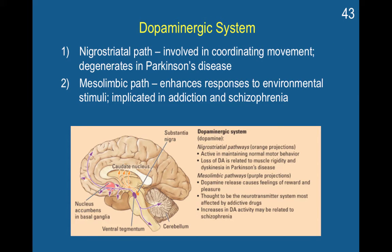Next is the dopaminergic system, which involves two paths. The nigrostriatal path is involved in coordinating movement and degenerates in Parkinson's disease. The mesolimbic path enhances responses to environmental stimuli and is implicated in addiction and schizophrenia. Dopamine is discussed heavily in this course because it is involved in drugs, Parkinson's, and Huntington's disease. These two parts help resolve the confusion about how the same neurotransmitter can be involved in such a wide array of behaviors.